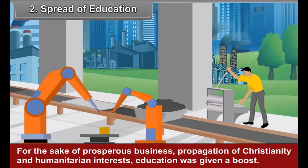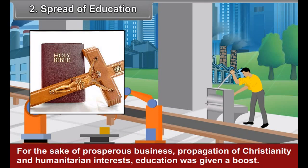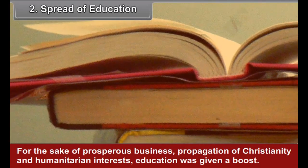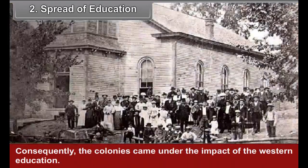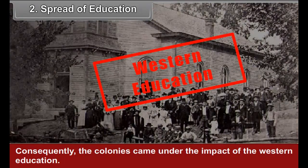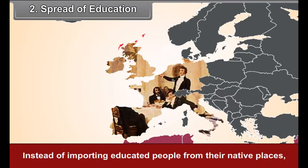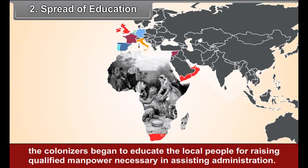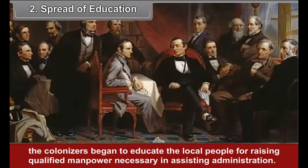Second, spread of education. For the sake of prosperous business, propagation of Christianity, and humanitarian interests, education was given a boost. Consequently, the colonies came under the impact of Western education. Instead of importing educated people from the native places, the colonizers began to educate the local people for raising qualified manpower necessary in assisting administration.